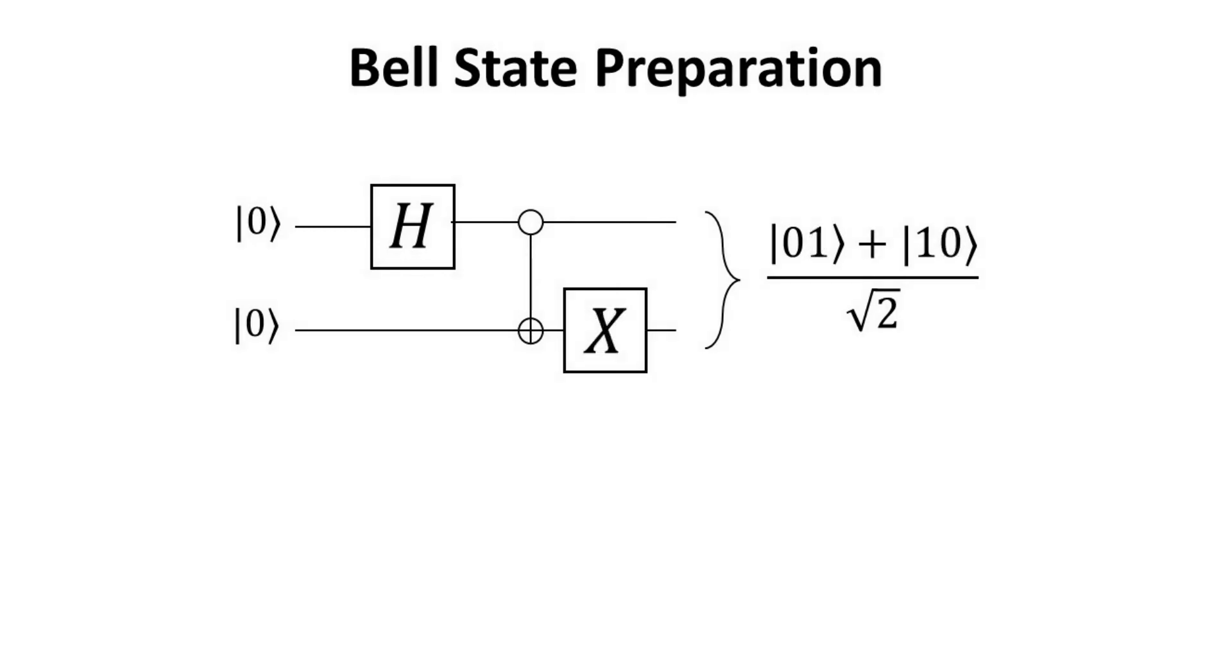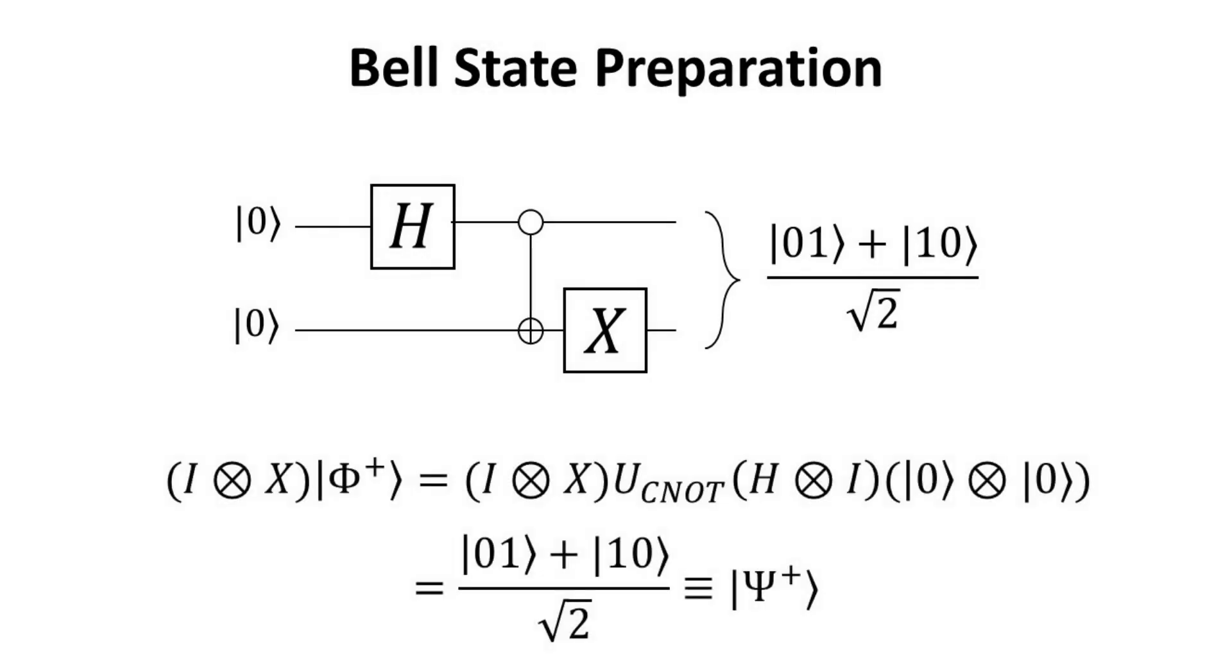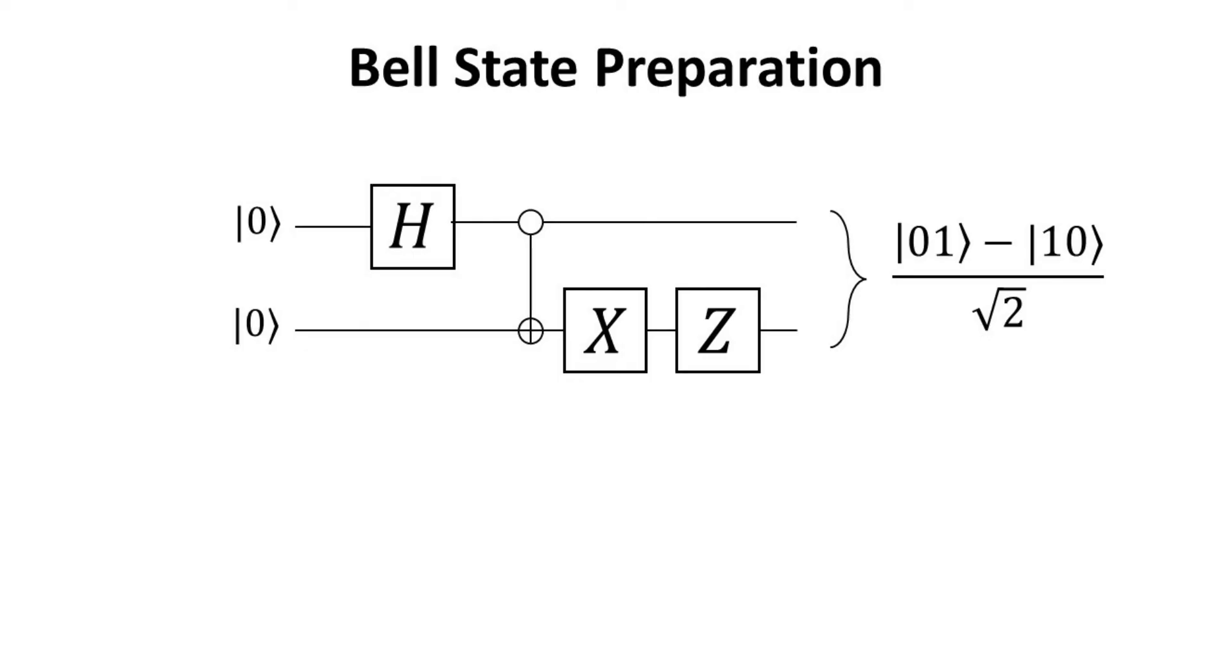If instead of a Z gate, we use the inverter gate, we obtain the psi plus state. This is readily seen as the X gate swaps the 0 and 1 states of the second qubit. Lastly, by adding a Z gate to the previous circuit, we can get the psi minus state. We have thus learned that the CNOT is a very important gate in quantum computing because it enables the creation of entanglement between two qubits. Entanglement represents a new resource in computation and enables quantum systems to process information in ways that are impossible with classical computing.